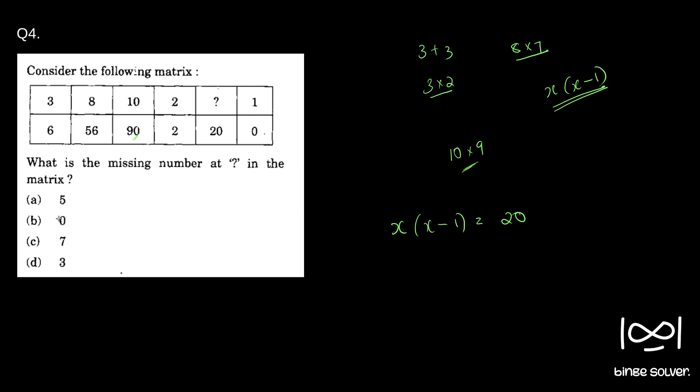So if you look at the options, you can clearly see 5. If x is 5, 5 into 4 is 20. So the correct answer is A. So the solution to question 4 is A.